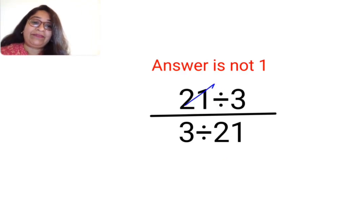See a lot of people do what 21 and 21 get cancelled, 3 and 3 gets cancelled. See this would have been possible. This would have absolutely been possible if the sign in your numerator and in the denominator was replaced by a multiplication sign.